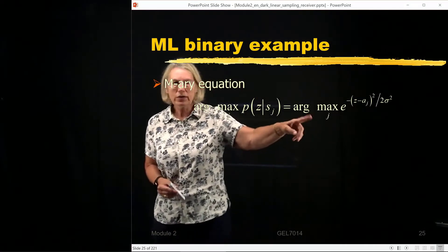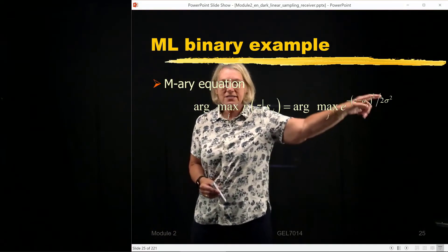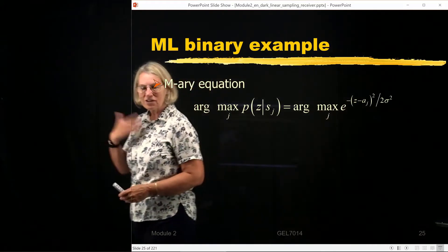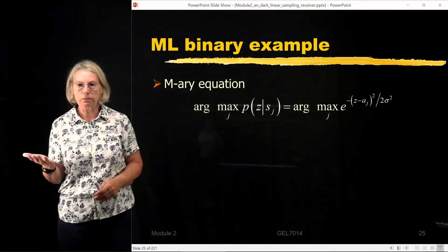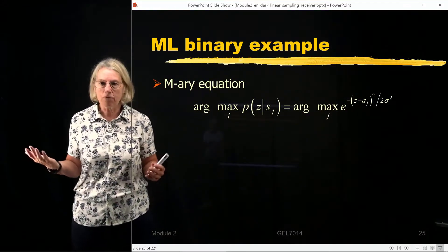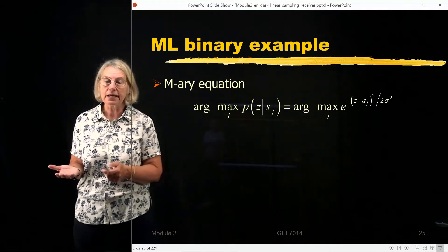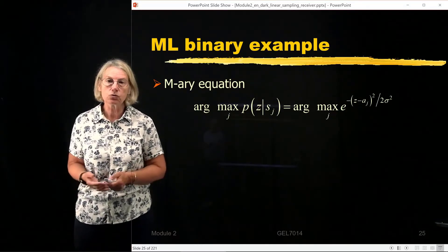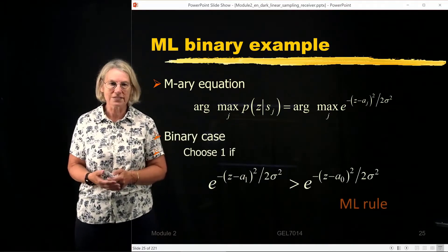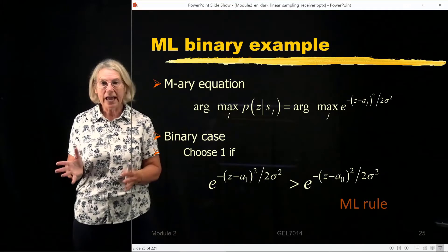So that means which j maximizes this exponential. Of course there was a term in the front, 1 over the square root of 2π sigma, but that's the same for all the j, so it doesn't enter into that maximization. So now we're just going to start manipulating this equation and try to get it into a form that is simpler to examine. So binary case, binary case, there's just two choices.